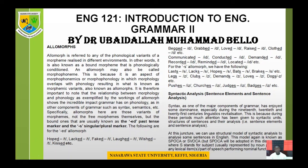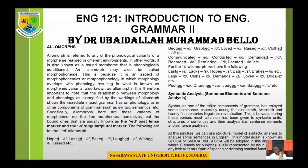This is why we have different models of doing syntactic analysis. At this juncture we can use the structural model of syntactic analysis. This model is called SPOCA or SVOCA — S-P-O-C-A or S-V-O-C-A. Anyone you choose refers to the same thing because V, which is verb, and P, which is predicate, are related — predicate is another way of representing verb. These are the elements of a sentence you can use in analyzing any sentence.